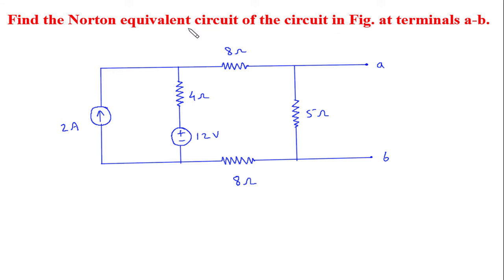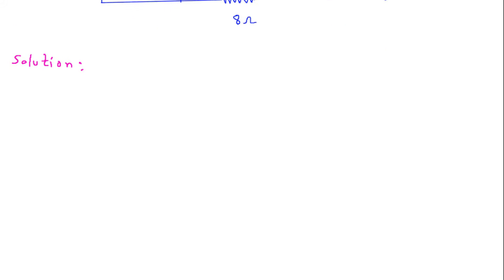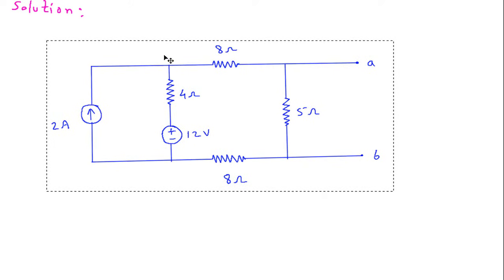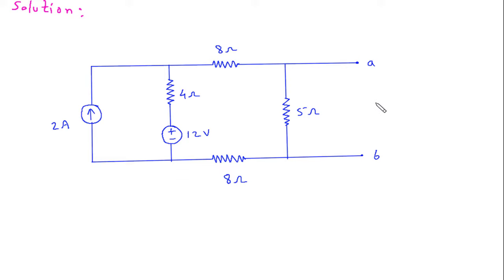Find the Norton equivalent circuit of the circuit in figure at terminals AB. We will redraw the circuit. Now we have to find In and Rn.